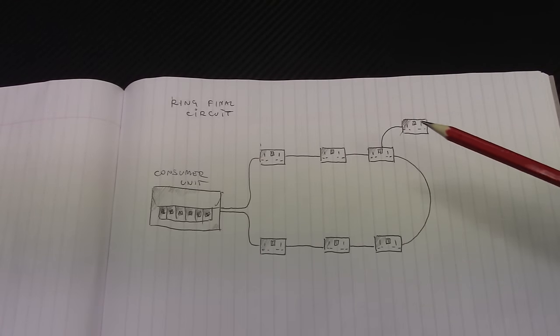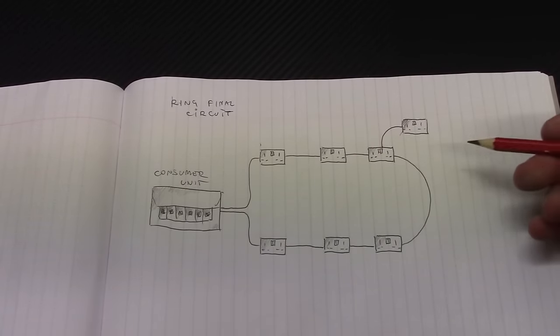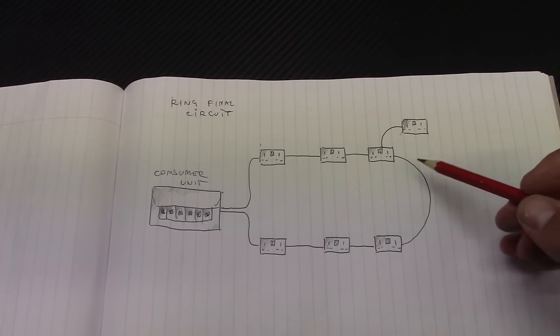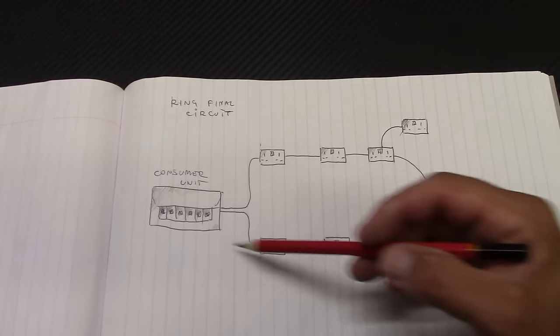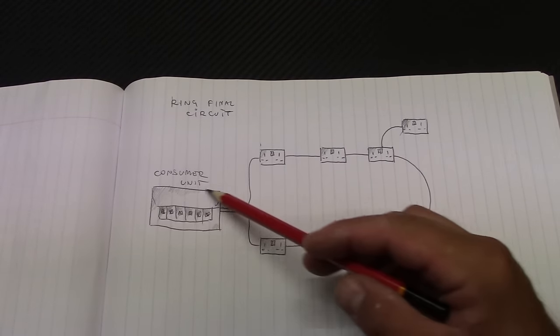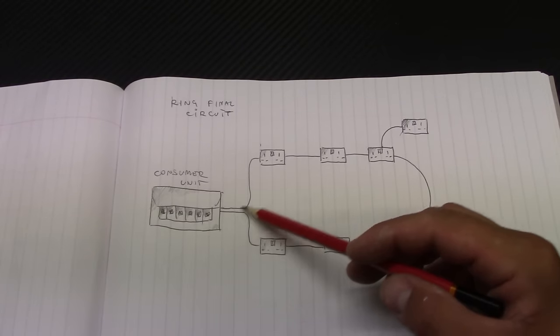So let's start from the ring final circuit. In my previous video I explained about the unfused spare. So this is my drawing. This is the consumer unit. Ring.